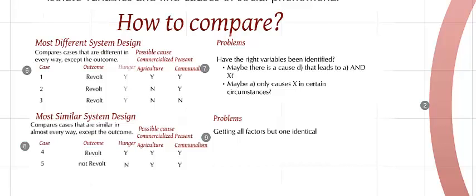This short tutorial is going to show you two very basic ways in comparative politics for comparing different cases. It's the most different system design and the most similar system design. These two ways of doing comparison are really quite classic in this field. I'm going to go through both of them, including some problems that arise from using them.